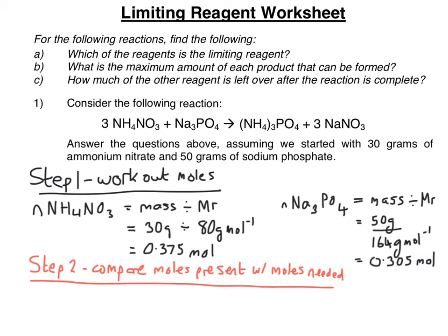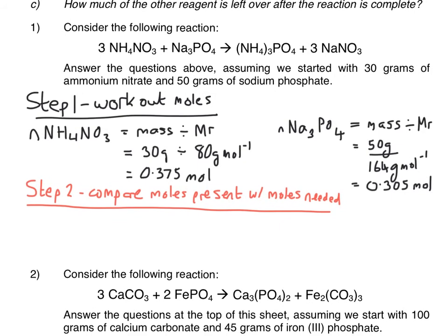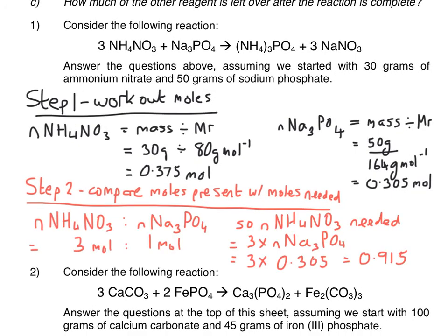So using the 3 to 1 mole ratio that we've just spotted, it's quite obvious that we have not enough NH4NO3 by quite a large amount. We need 0.915 moles of it. We only have 0.375 moles of it. So it must be that NH4NO3, ammonium nitrate, is the limiting reagent in this case.